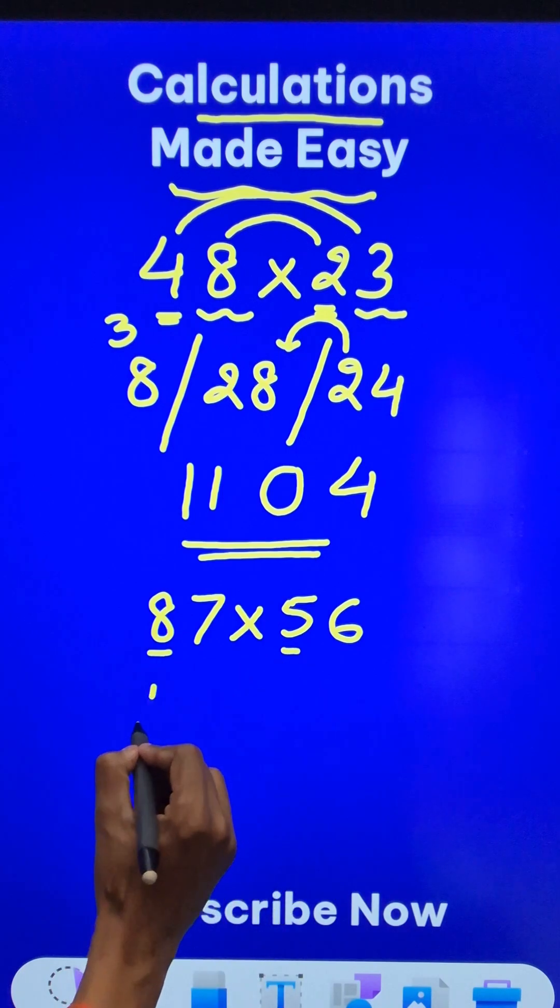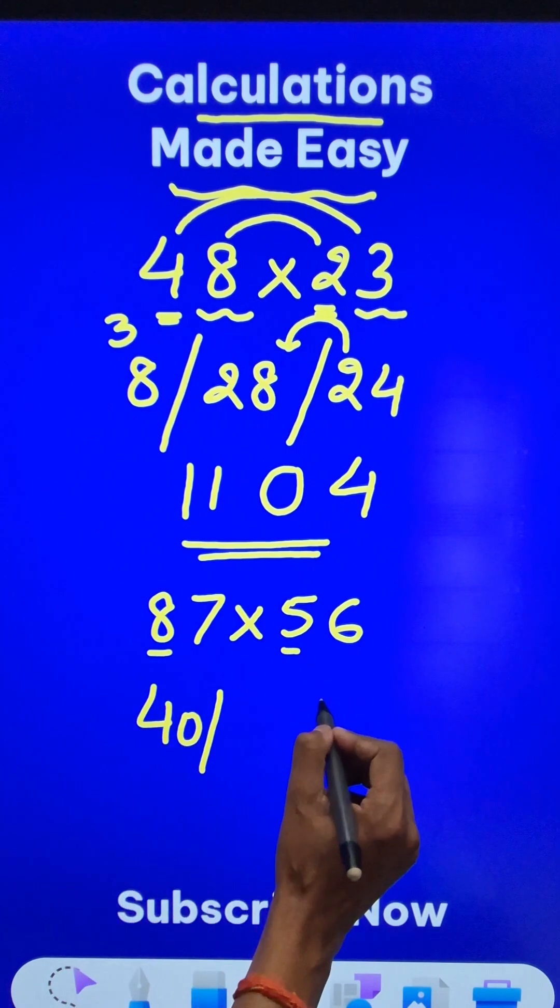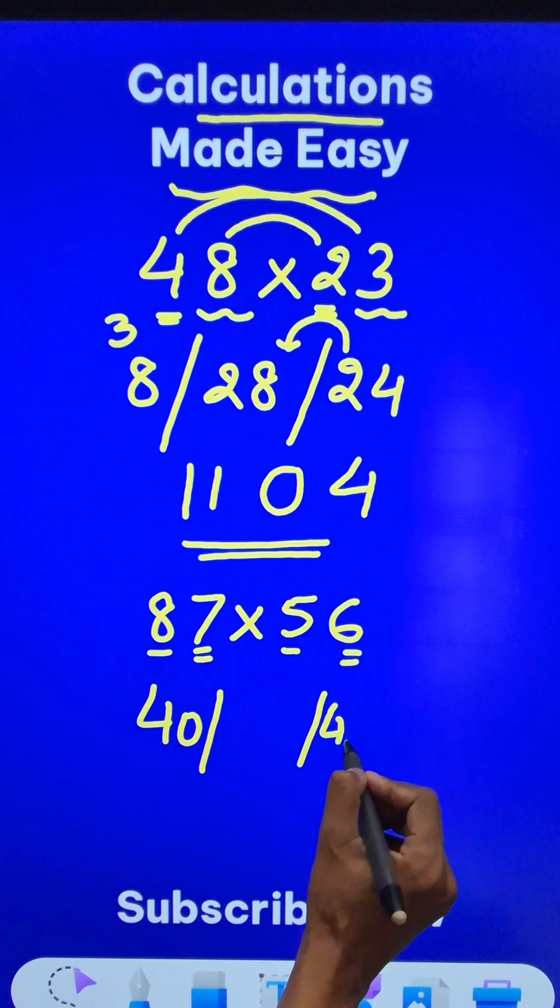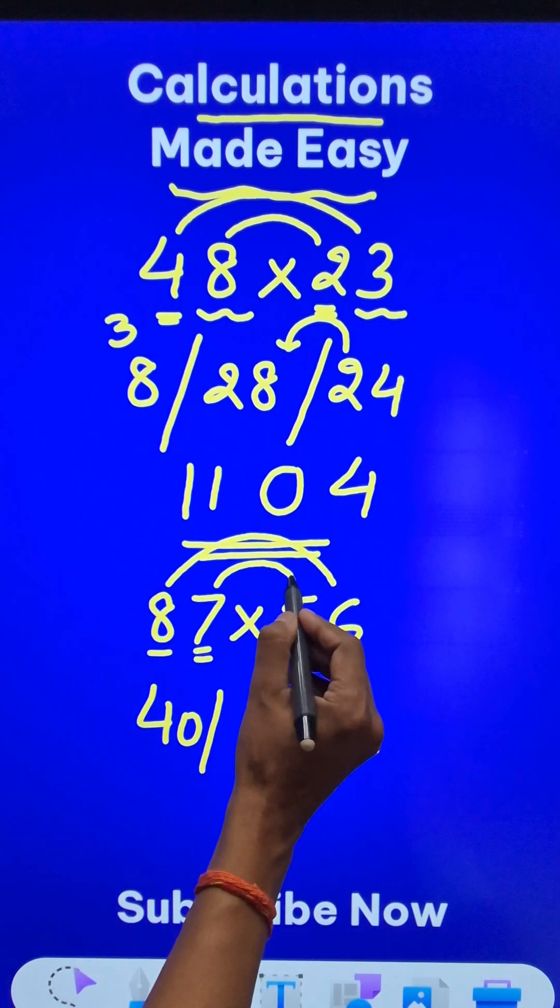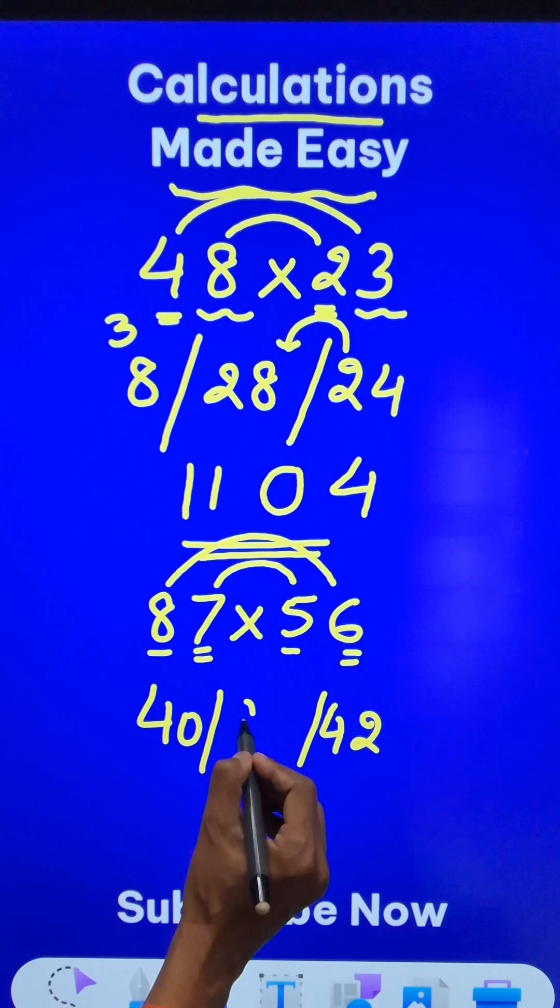8 times 5 is 40 and then leave some space. 7 times 6 is 42 and finally, 8 times 6 are 48 and 7 times 5 are 35. When you add them, you get 83.